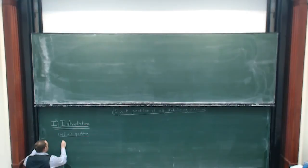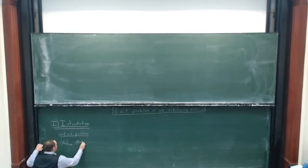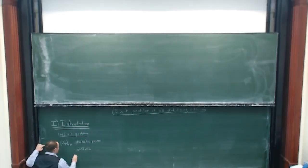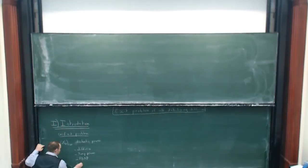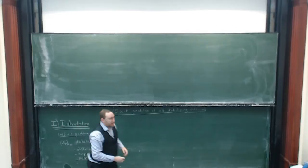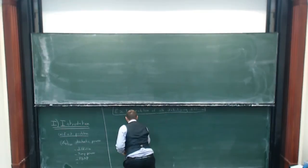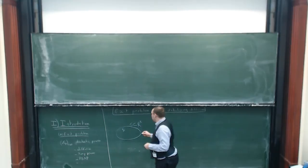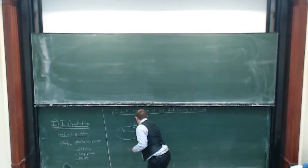I consider a stochastic process X_t for t greater than or equal to zero. It can be a diffusion — in my case it is always a diffusion — it can be a jump process, it can be a piecewise deterministic Markov process, it can be anything. I have a domain G included in R^k, a point x_0 in this domain G, and the stochastic process begins at x_0. We wonder when it will exit from G.